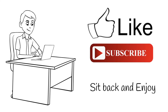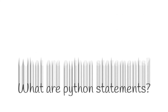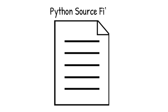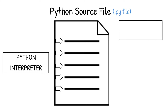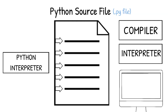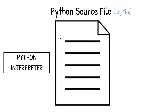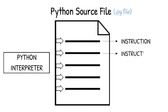Let us start with the first topic: what are Python statements? All Python code is written in the Python source file, also known as the .py file. When the source file is executed, the interpreter runs through each line of code one by one and executes it accordingly. The interpreter will execute the source file line by line, where each line holds certain instructions for the interpreter.